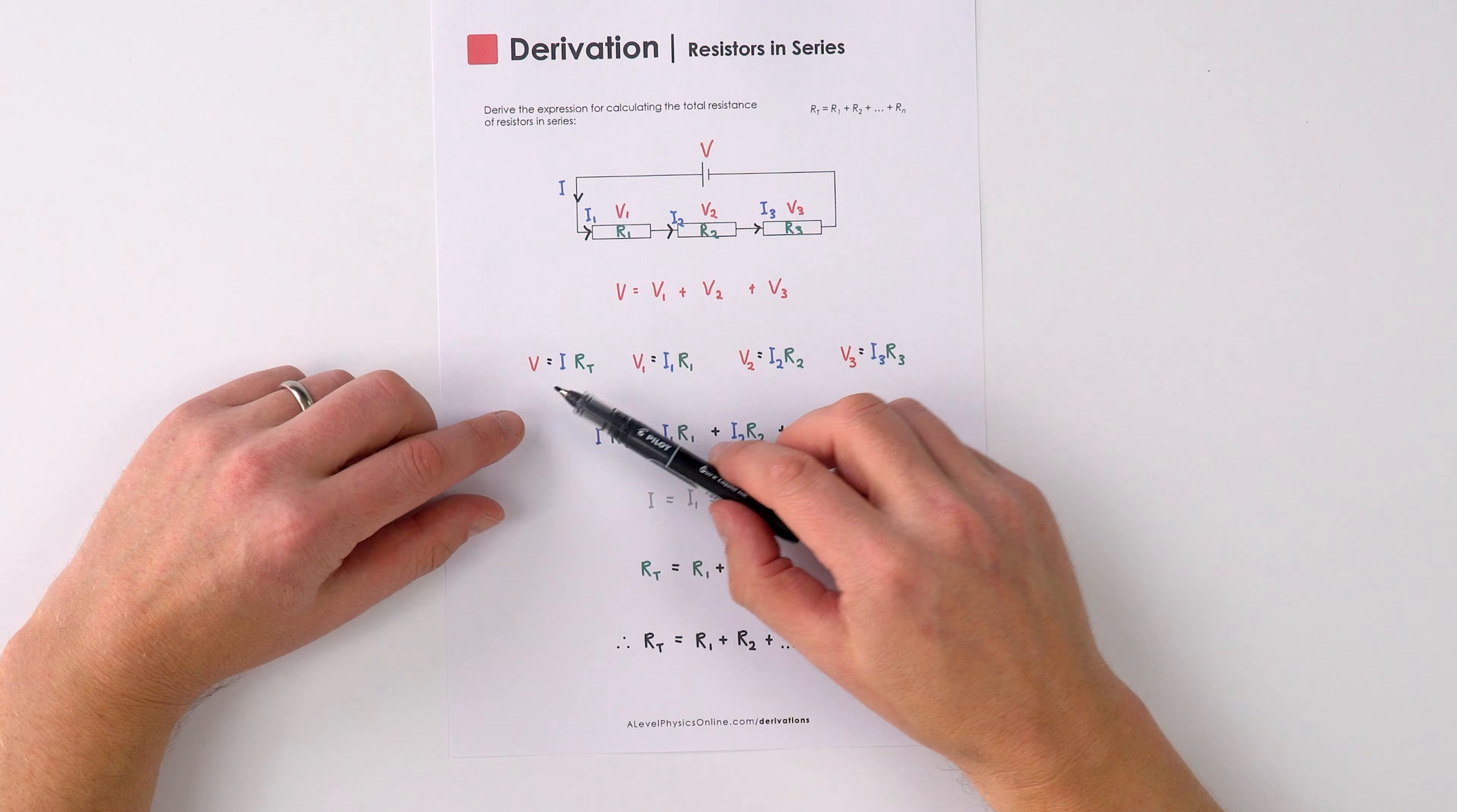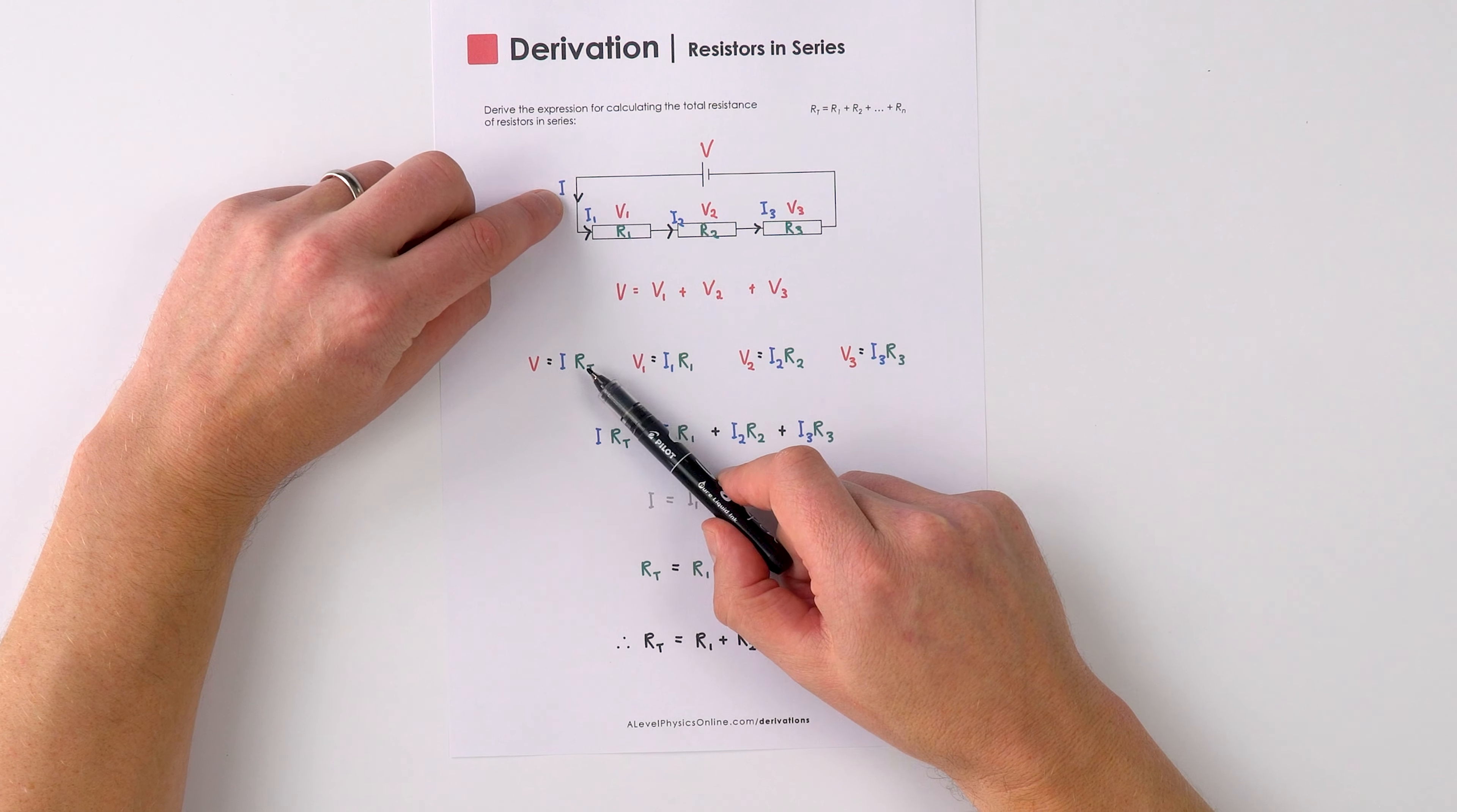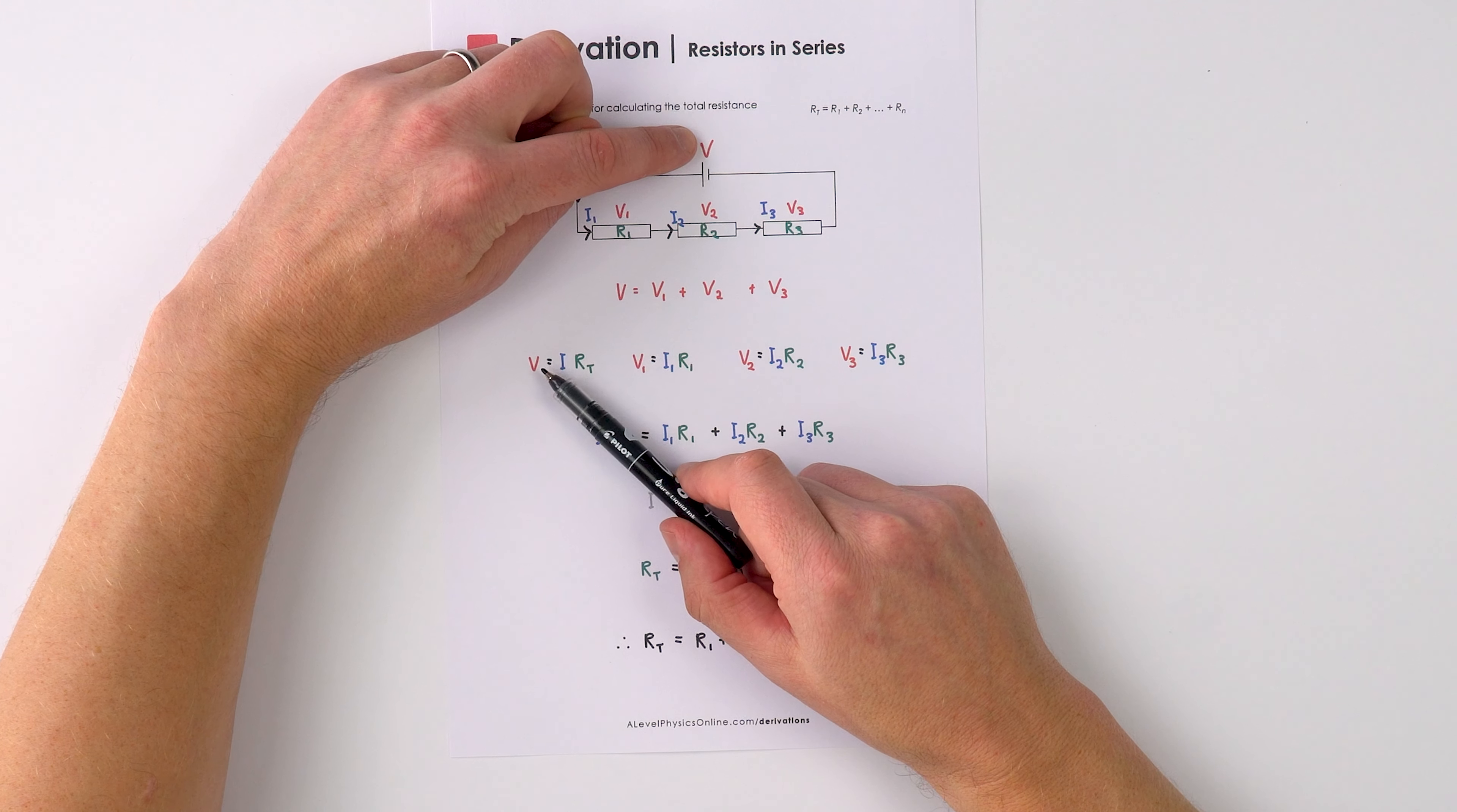We know of course as well that V equals IR, and therefore we can say that the current here, I, multiplied by the total resistance of that circuit is equal to this value of V up here.